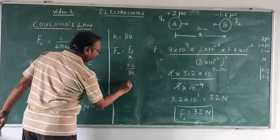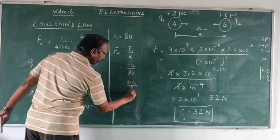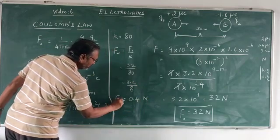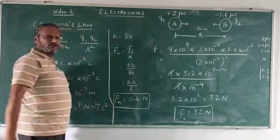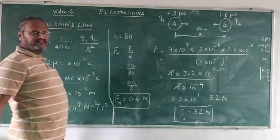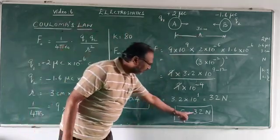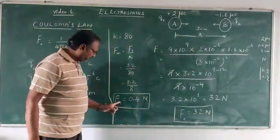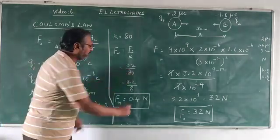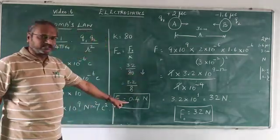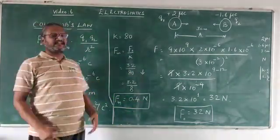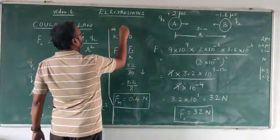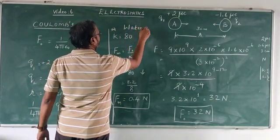And that is nothing but 3.2 divided by 8, that is nothing but 0.4 newton. So force in the medium is 0.4 newton. Let us watch carefully, let us understand. The two charges are placed in air and its value is 32 newton, the force of attraction. But the same charges when placed in water, the value decreases 80 times. The value turns out to be 0.4 newton. That means the force of attraction has reduced. With this concept of dielectric constant, and here I have taken water as a medium, we have done this numerical. Thank you.